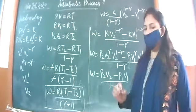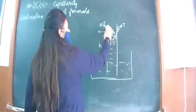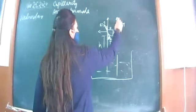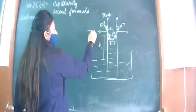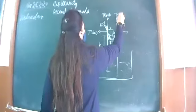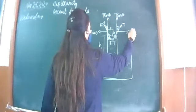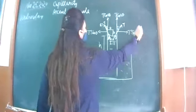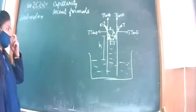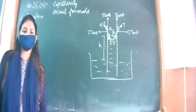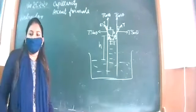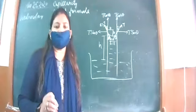Theta is the angle of contact. We resolve T into two components: T cos theta in the upward direction and T sin theta in the horizontal direction. The same components act at every point around the meniscus. This diagram matters — never attempt this derivation without drawing it.